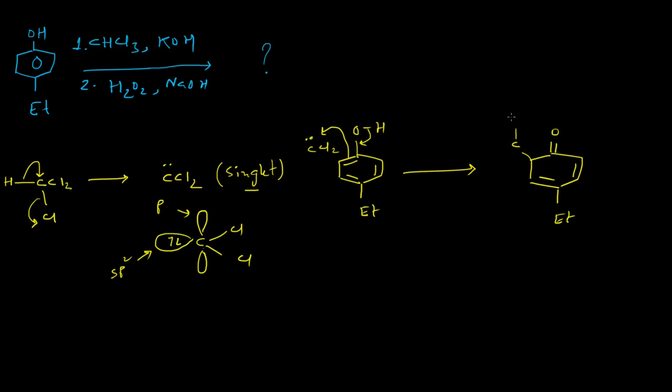After this, this particular intermediate will form. This C negative center will immediately abstract this proton and this moiety will be re-aromatized again. So the next intermediate will be this one.